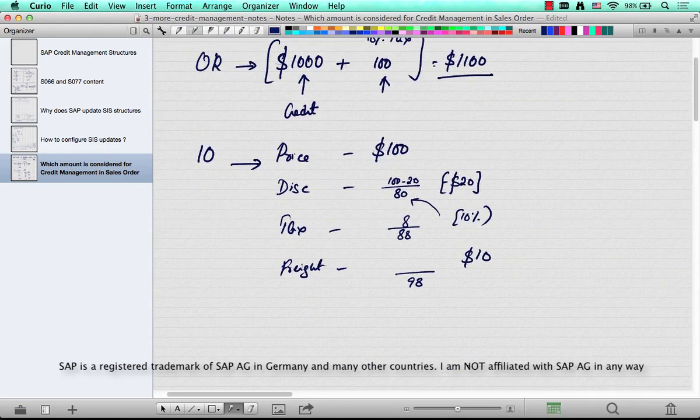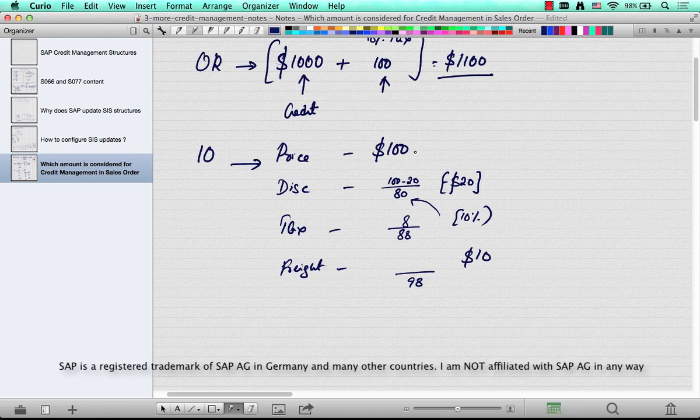So what's the value that should be considered for credit? Is it $100, $80, $88, or $98? Typically, it's the total value that the customer has to pay that's considered for credit. If the customer has to pay this amount, that's what will be the credit amount. So how do you tell SAP that this is the amount that should be considered for credit?